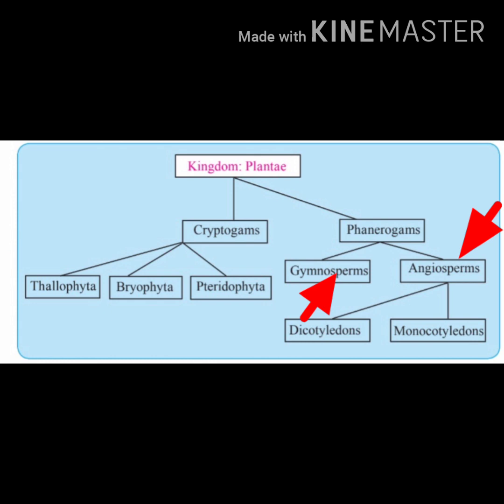Based on whether seeds are enclosed in a fruit or not, phanerogams are classified into gymnosperms and angiosperms. Gymno means naked and sperm means seed — so gymnosperm seeds are not present inside a fruit. In angiosperms, the seeds are enclosed inside the fruit. Angio meaning covering and sperm meaning seed — so gymno is naked seed and angio is covered seed.